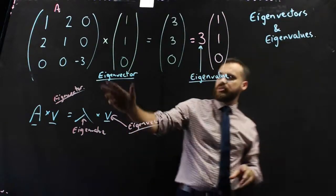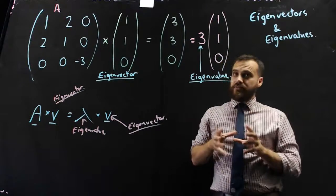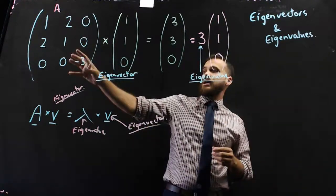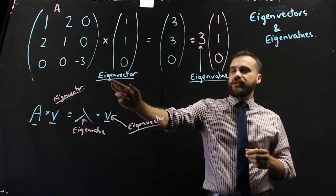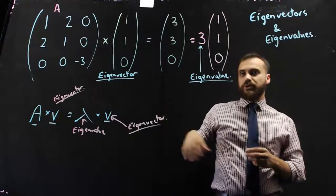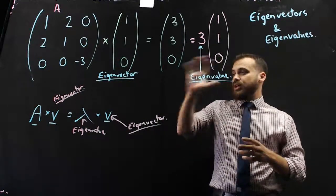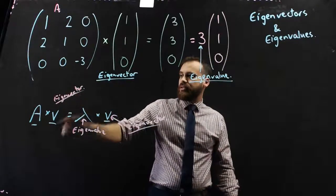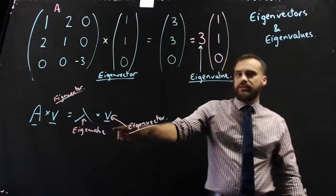This is only working because I specifically chose the eigenvector. Now, in future videos, you'll learn how to look at a matrix and find the eigenvector, or look at a matrix and find the eigenvalue that results from multiplying by the eigenvector. But for now, we just need to know this neat little relationship here. A times the eigenvector is equal to lambda times the eigenvector.